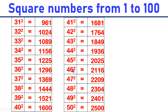46 square is equal to 216. 46 square is equal to 610. 47 square is equal to 2209. 48 square is equal to 2304. 49 square is equal to 2401. 50 square is equal to 2500.